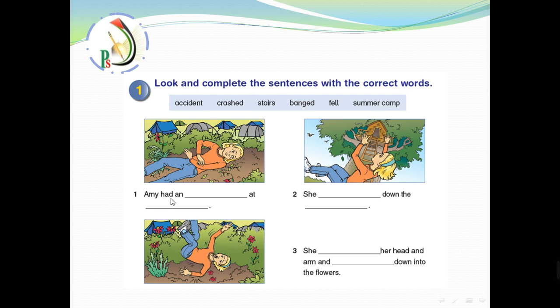Amy had an accident at summer camp. Very good. Amy had an accident at summer camp. Pause the video, try to answer them by yourself and then check your answer. Past number two, what do you think, Amy? She fell down the stairs. She fell down the stairs of the tree house. Very good.